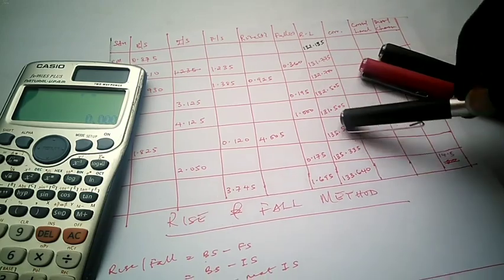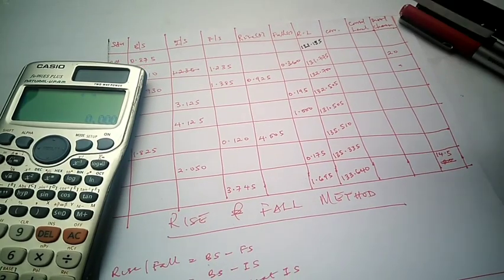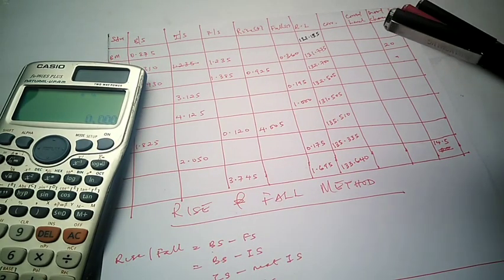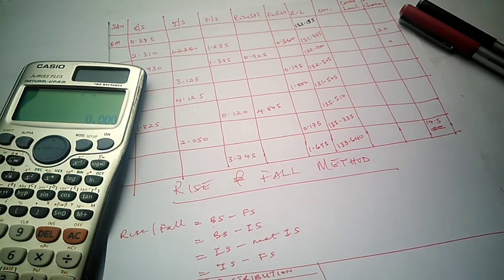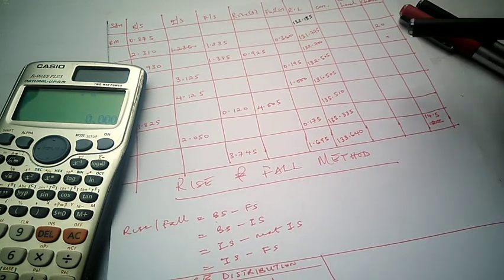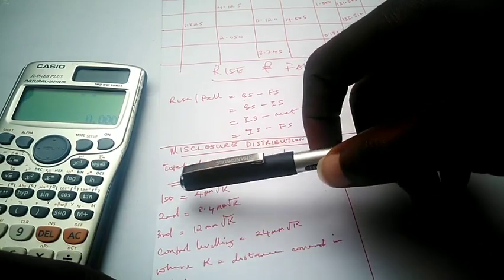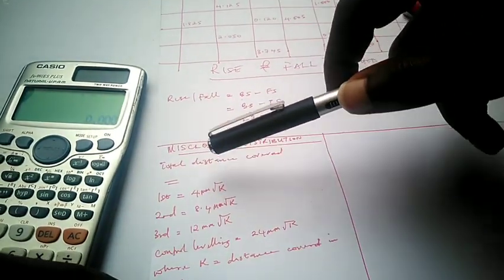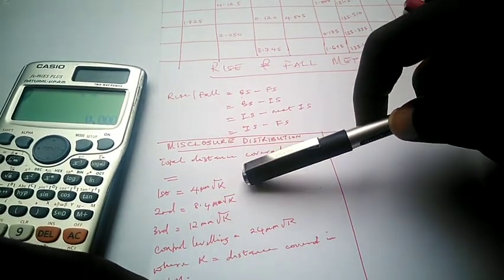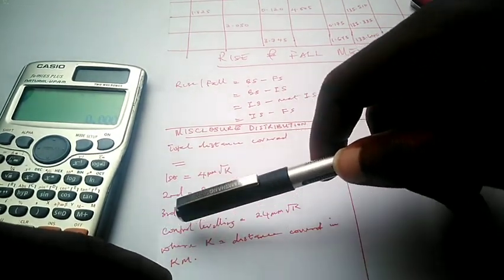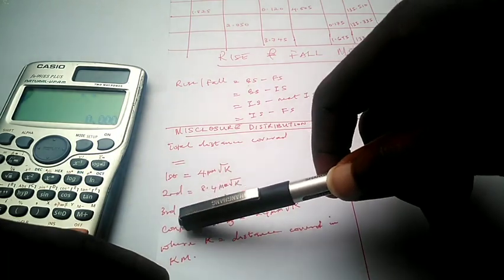The last time we computed the reduced level; today we want to compute the corrected level. To do that, we are going to look at the formulas we use to determine the reliable error or reliable misclosure for different accuracy levels — first order, second order, third order, or lower. For first order, accuracy is determined by 4 mm√k; for second order, 8.4 mm√k; for third order, 12 mm√k.